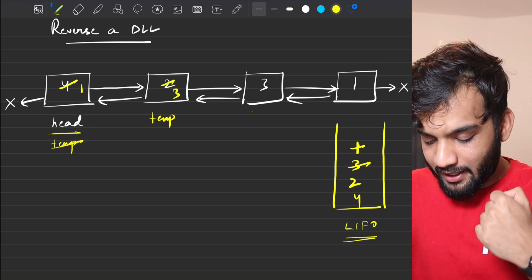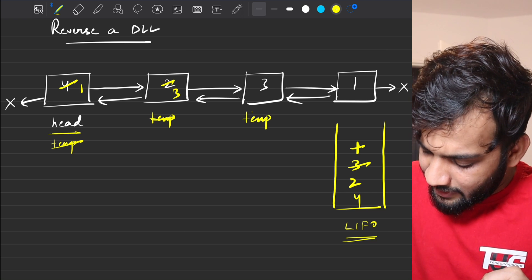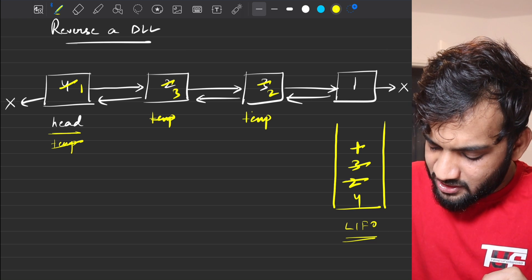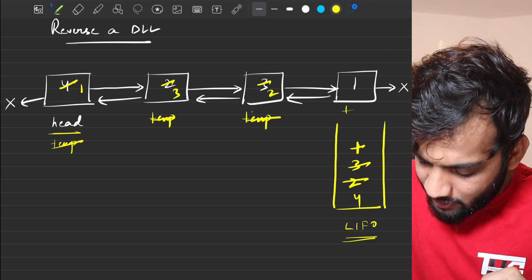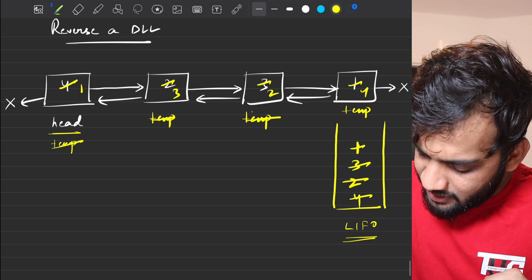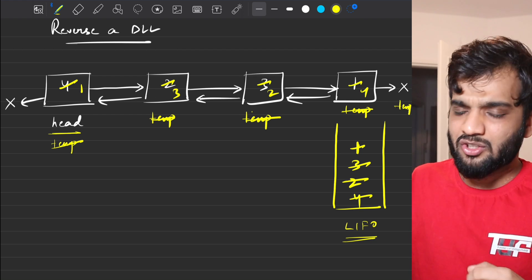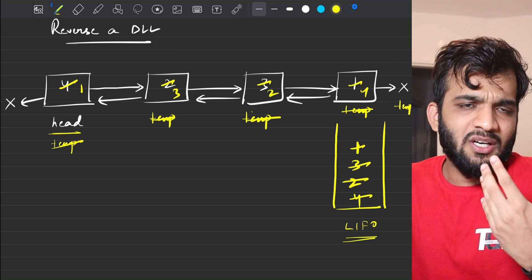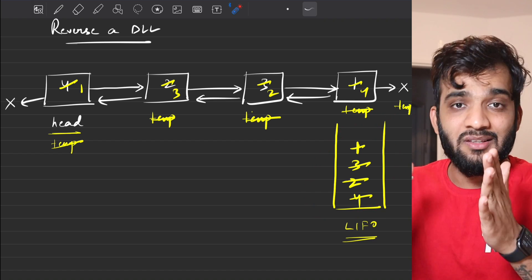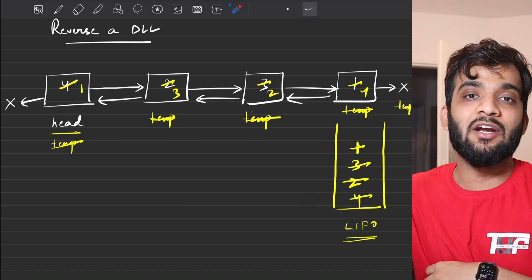We keep repeating: take the top element from the stack, replace the data at the current node, then move the temporary forward. We continue until the temporary reaches null or the stack is empty. That is when we stop the second iteration.